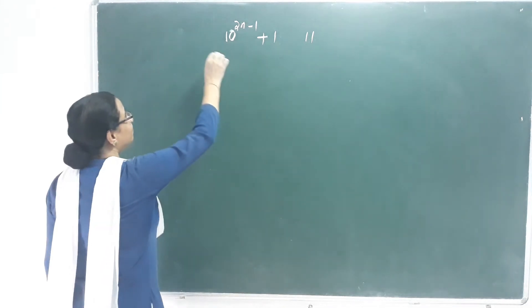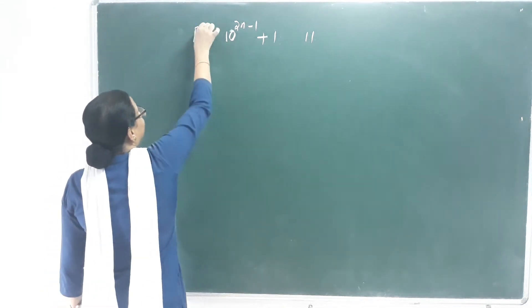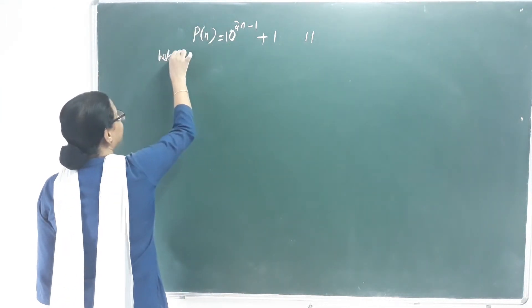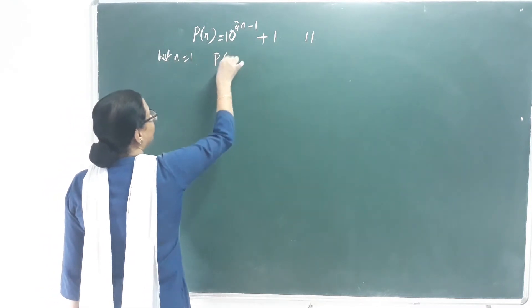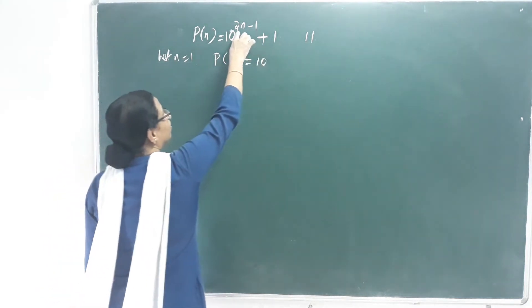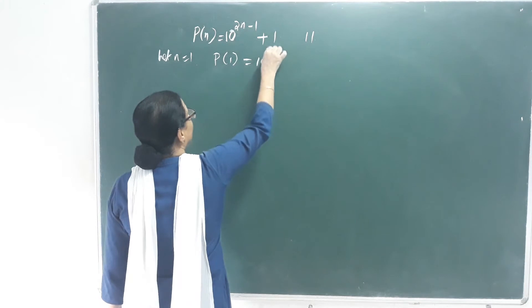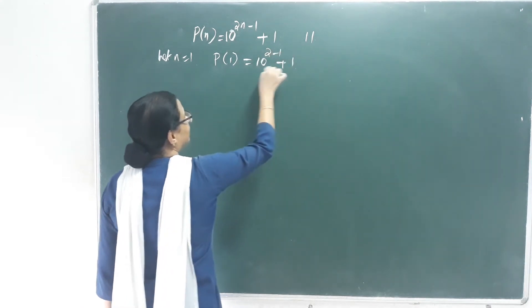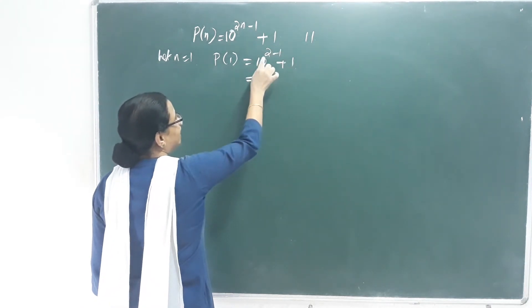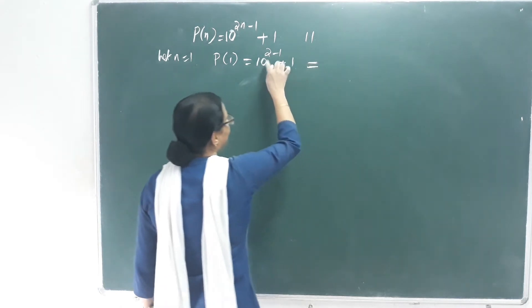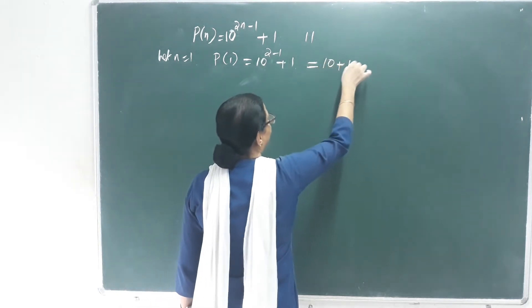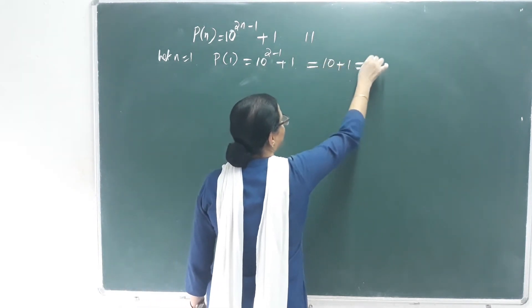First, we name the statement. Let n equal to 1. Then P of 1 equals 10 raised to 2 times 1 minus 1 plus 1, which is 10 raised to 2 minus 1, which is 10 plus 1, which equals 11.